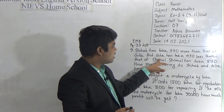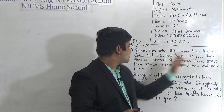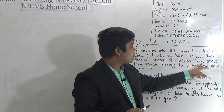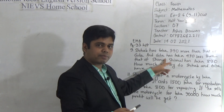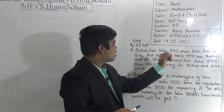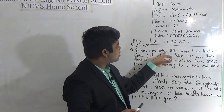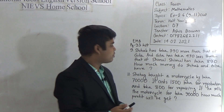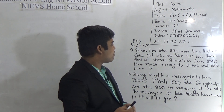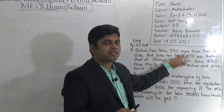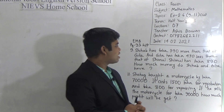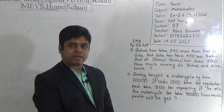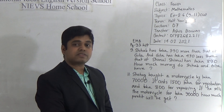Notice: Gita has 470 less than Shimul, which means if we subtract 470 from Shimul's amount we get Gita's amount. From that information we notice that Shihab has taka 390 more than Gita. So once we find Gita's amount, we add 390 to it and we get Shihab's amount. I have told you many times — when you want to solve a word problem, first make a plan. If you make a plan, it is easier to solve.